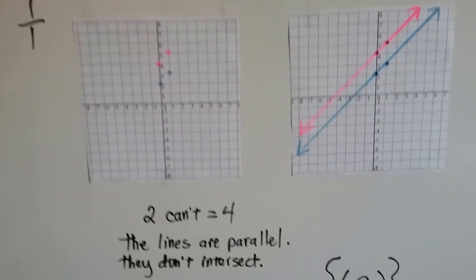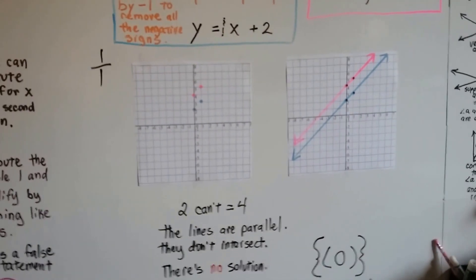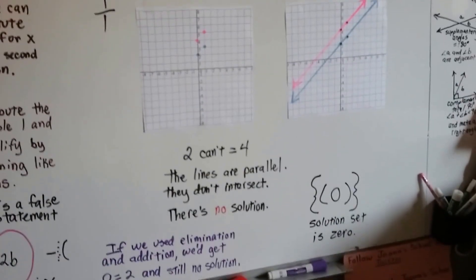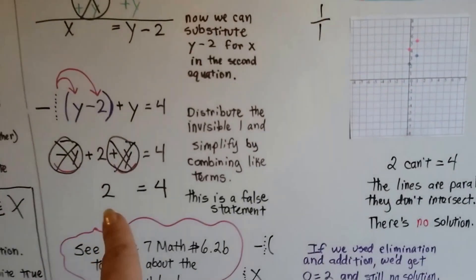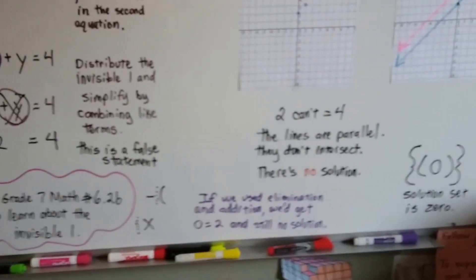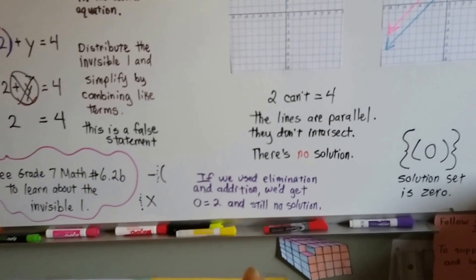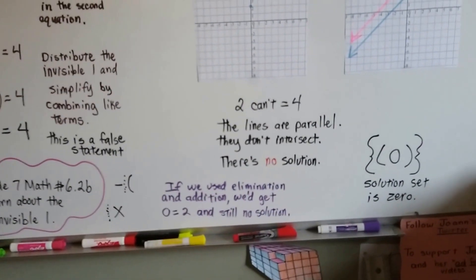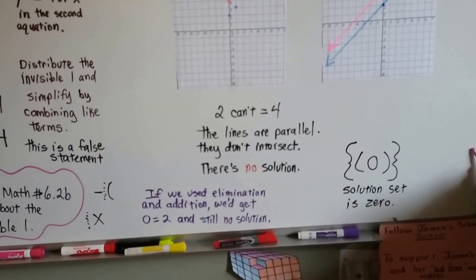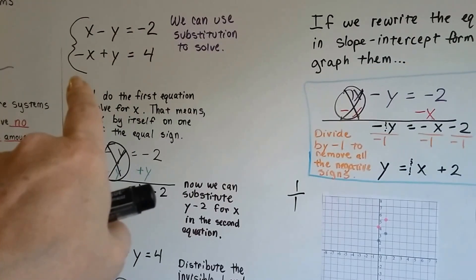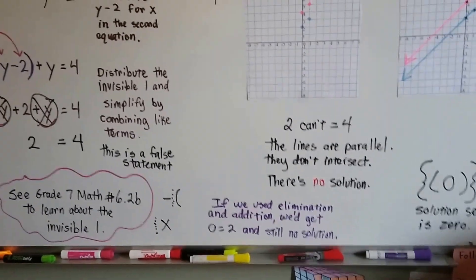Well, 2 can't equal 4, and the lines are parallel and they don't intersect, so there's no solution. Well, we knew that, didn't we? We knew 2 can't equal 4. Now, what if we used elimination and addition? We'd get 0 and 2, and we'd still have no solution. Our solution set is 0. So we could have used elimination and added, and we still would have gotten 0 equals 2, which wouldn't make sense.